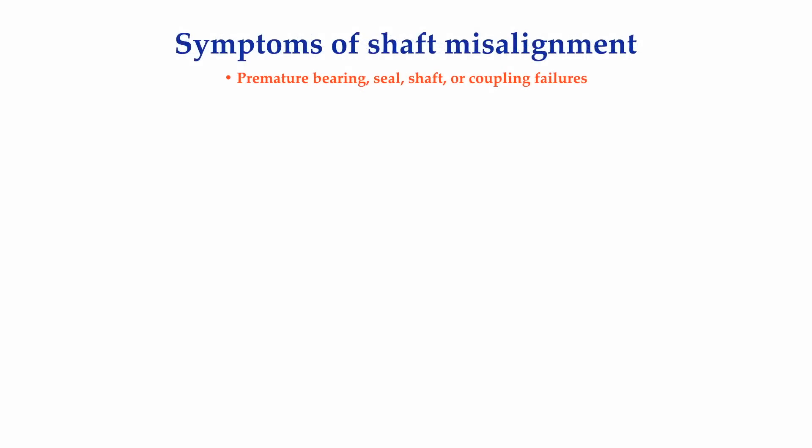Before we get into the more technical aspects of aligning machinery, let's take a look at what some of the symptoms of shaft misalignment are. One of the symptoms is that you will see premature bearing, seal, shaft, or coupling failures. First, we should talk about some very basic design principles of rotating machinery, starting with the rotating shaft and the bearings that support it.